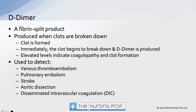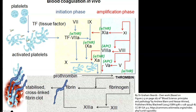D-Dimer is used to detect venous thromboembolism, pulmonary embolisms, stroke, aortic dissection, and also in DIC. So lots of different uses. We've even talked about the possibility of using D-Dimer to help us detect myocardial infarctions.